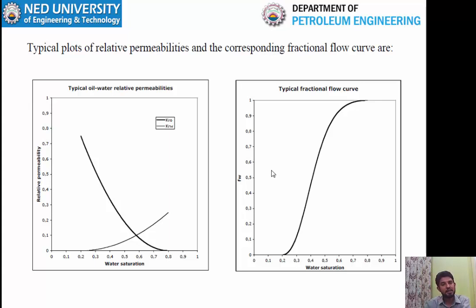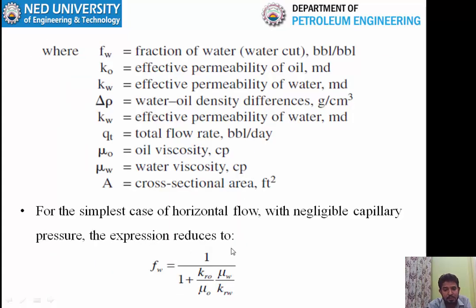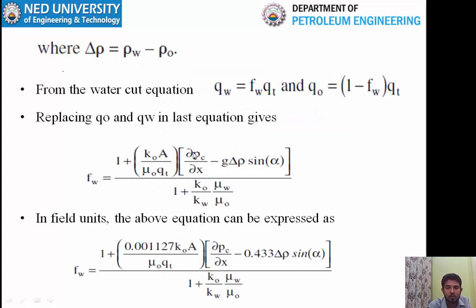Fw is dependent on water viscosity, oil viscosity, relative permeabilities, wettability, interfacial tension, dip angle, injection rate, and other parameters. In the simplest case it depends on relative permeabilities and viscosities. In the complex version when Fw depends on capillary forces, dip angle, densities, and injection rate — any change in these terms will change Fw.